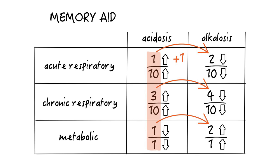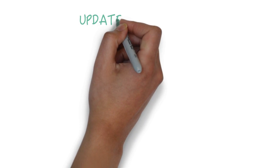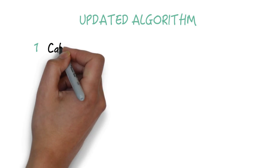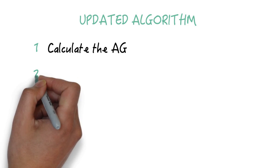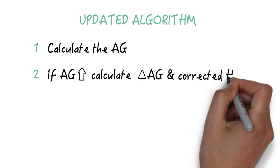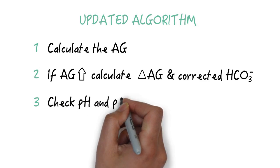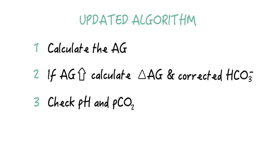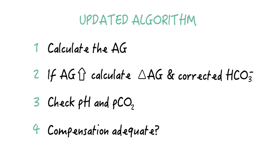We can now complete our algorithm for diagnosing any acid-base problem. Number one: calculate the anion gap. Number two: if there is an elevated anion gap, calculate the delta anion gap and the corrected bicarb. Number three: check the pH and the pCO2 to identify the primary problem — is it metabolic or respiratory? Number four: check if compensation is adequate, and if it's not, an additional acid-base problem is present. You now have all the tools to assess over 90% of acid-base problems. Now go through the practice cases and make sure that what you've learned sticks.